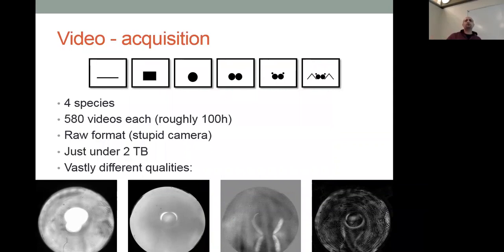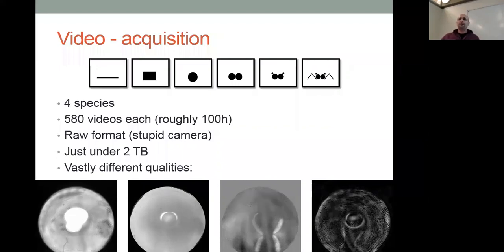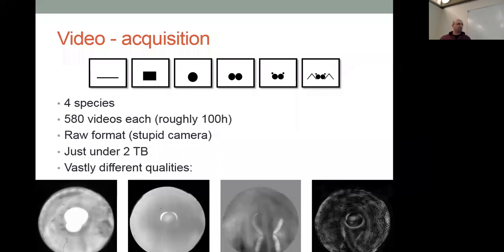Can machine learning help predict the behavior of the spider eyes? Potentially yes. One hope is to use a Markov model to predict the next retina location based on where it was before. Machine learning can definitely help with that, but the devil is in the details — collecting data without noise. I'd also need a different normalization: currently I normalize relative to stimulus position, but to predict retina location I'd need to normalize relative to a baseline retina position for each spider.